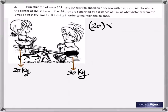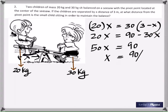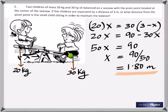20 times x should be equal to 30 times (3 minus x). Distributing gives 90 minus 30x. Collecting terms and solving, you get x as 1.80 meters. So the smaller child is at a distance of 1.80 meters from the pivot, while the bigger child is at a distance of 1.20 meters from the pivot.